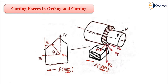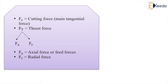Now, what are these forces? Fc is our cutting force, also known as the main tangential force. Ft is our thrust force, also called the vertical force, having two components: one is the axial force or feed force, and another is the radial force, Fa and Fr.